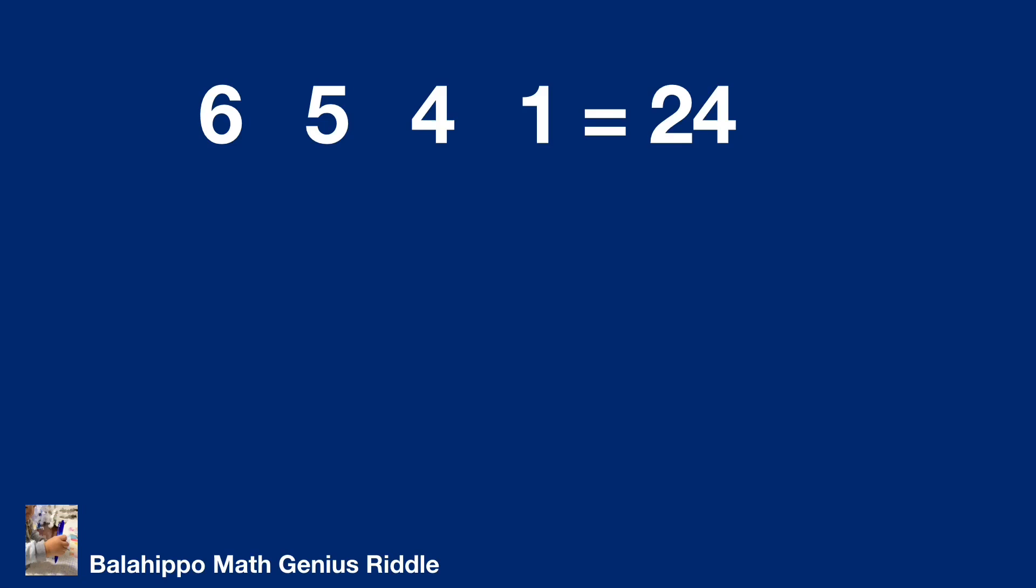Then, how about using division? 6 divided by a number equals 24. The value should be equal to 1 over 4. How to generate 1 over 4 from the numbers 5, 4, 1? The solution is bracket 5 over 4 minus 1 bracket equals 1 over 4. That's the second solution we find. Do you find more?